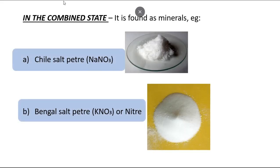We studied how nitric acid is formed in the free state. Now, in the combined state, it is found as minerals like sodium nitrate — commonly called Chile saltpetre — and potassium nitrate, called Bengal saltpetre or nitre. Nitre means potassium nitrate.